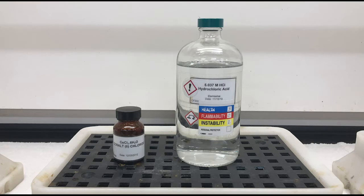To prepare our solution, we'll use cobalt-2 chloride hexahydrate and hydrochloric acid as our solvent. Be sure to write down the concentration of the hydrochloric acid as we're going to need it later in our calculation.